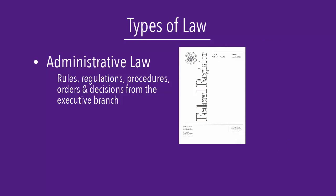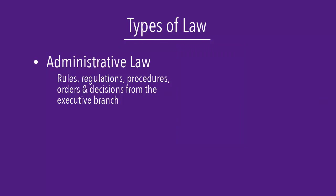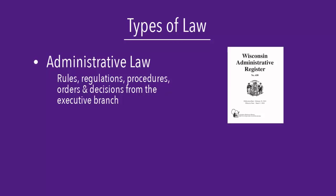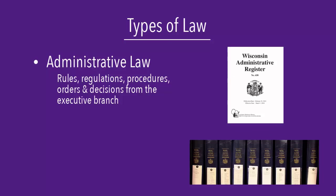The resulting publications include the Federal Register, which is the daily activity of federal agencies, and the Code of Federal Regulations, which includes the actual regulations and is updated annually. The documents published at the state level in Wisconsin are the Administrative Register, which is the bi-weekly activity of the state agencies, and the Wisconsin Administrative Code, which includes the actual regulations and is updated annually. These texts can be found online or in print or microform at Anderson Library.